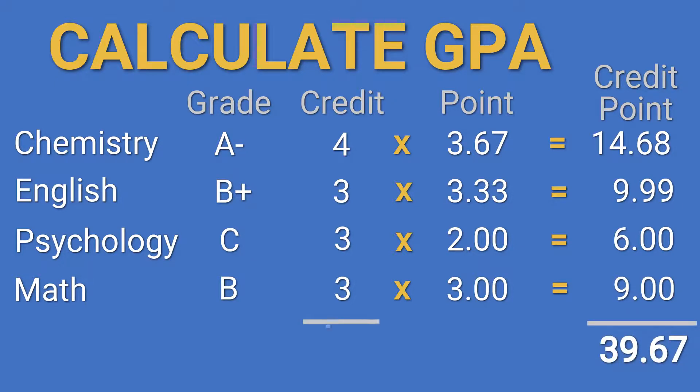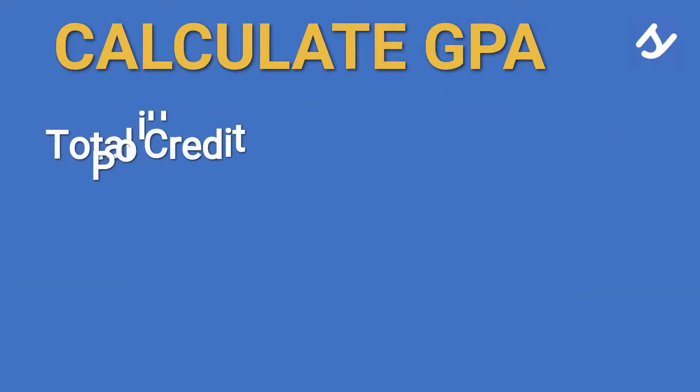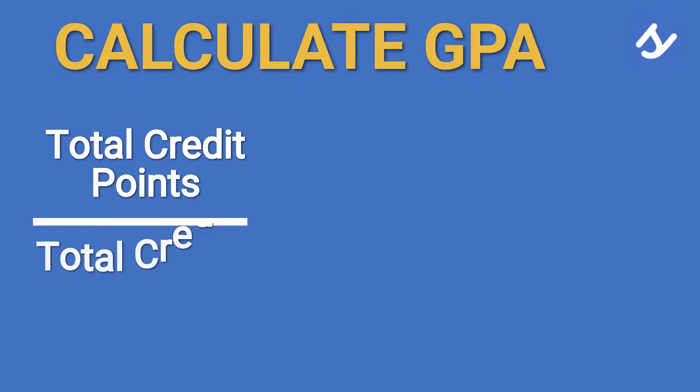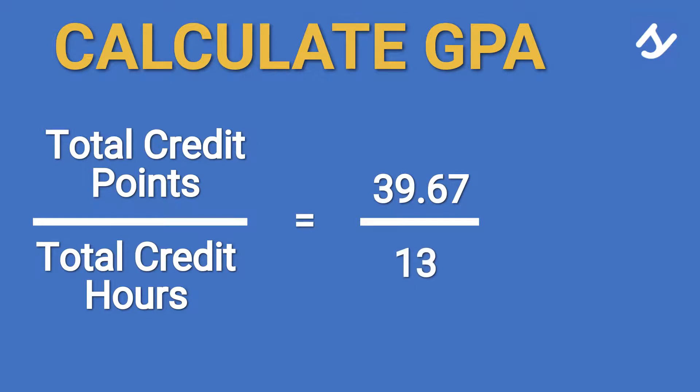Add up all the credit hours, that's 13. To calculate your GPA, divide the total credit points with the total credit hours. That's 39.67 divided by 13 and that equals 3.05. That's the GPA for this example.